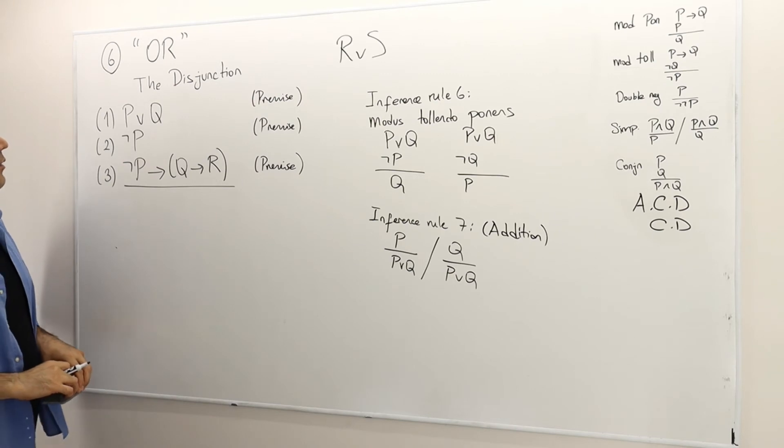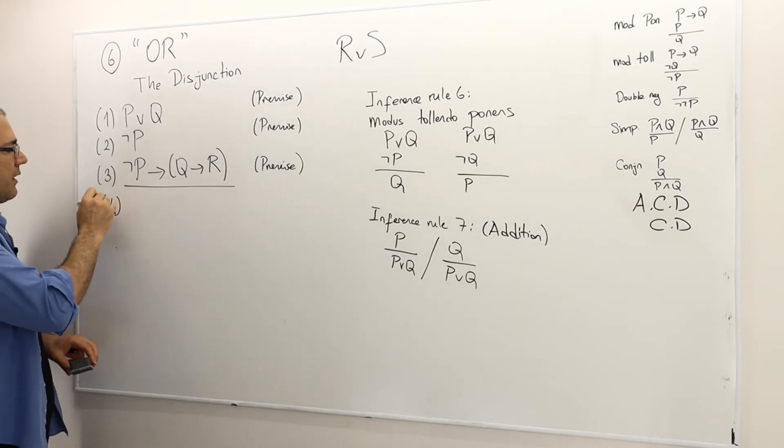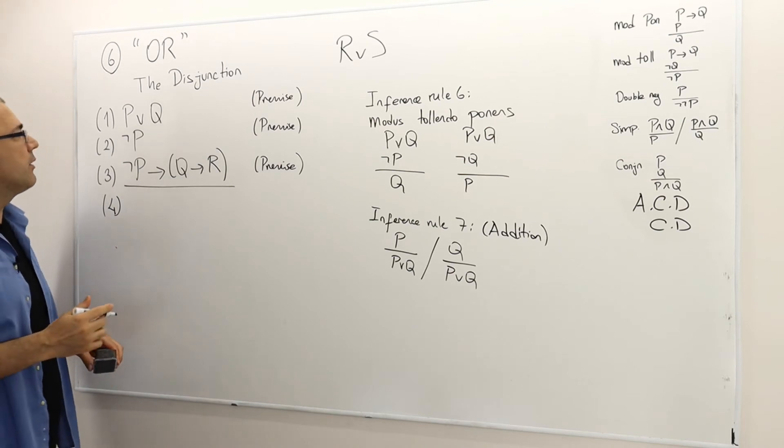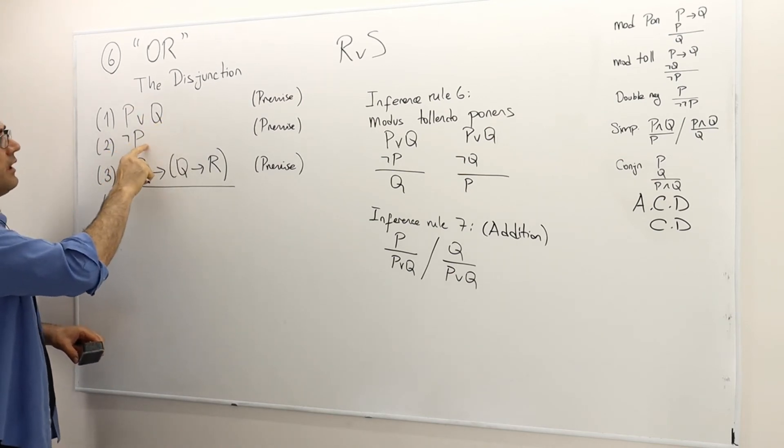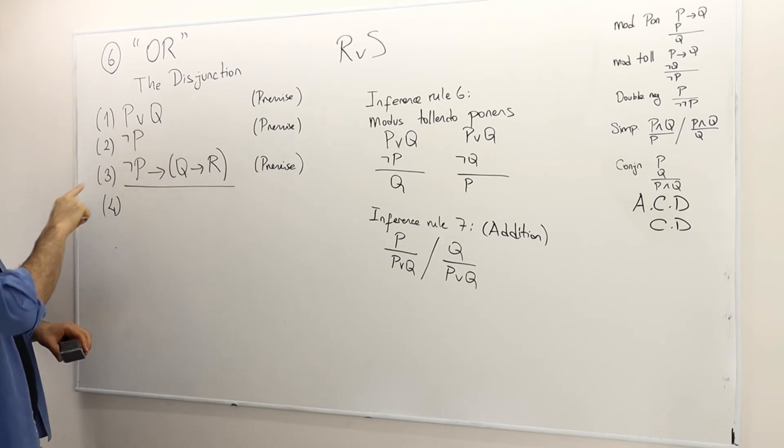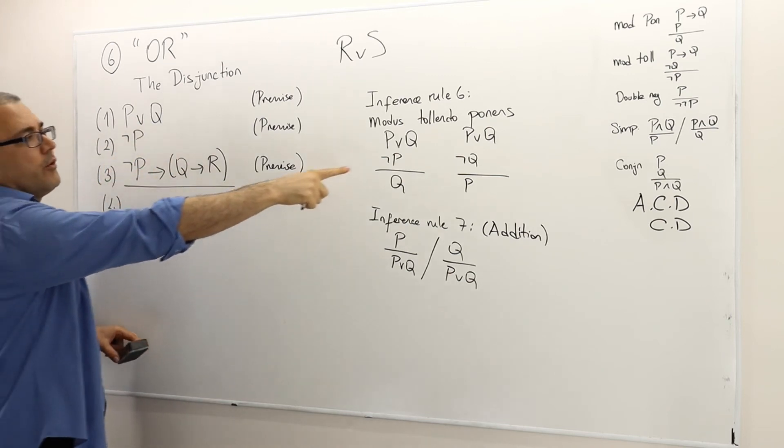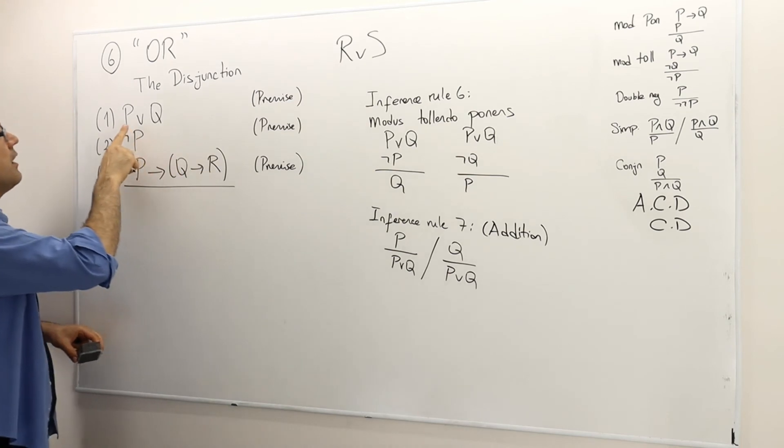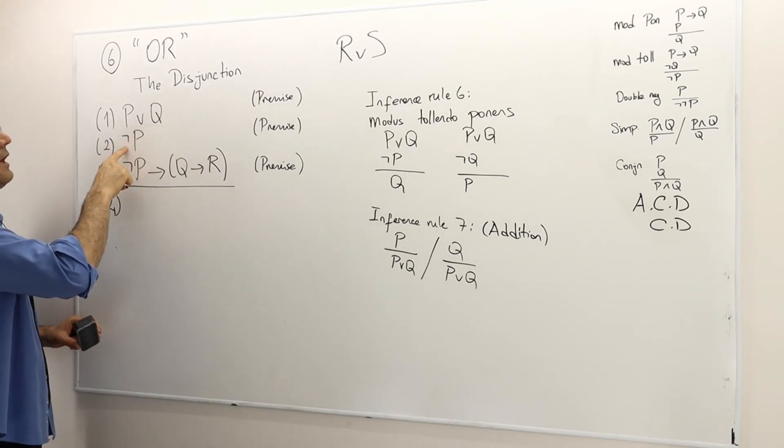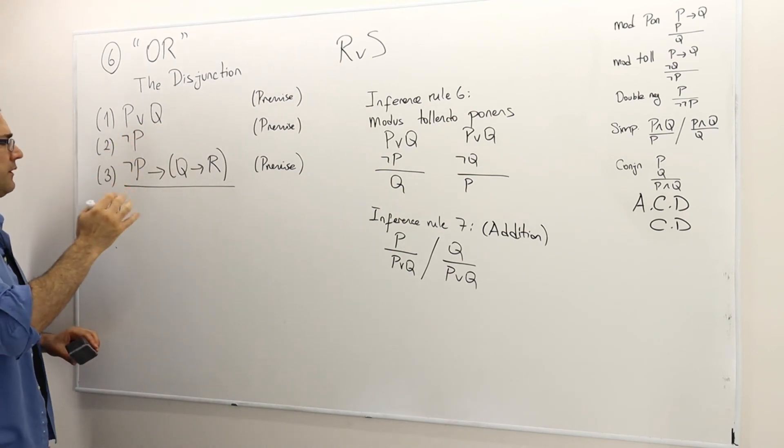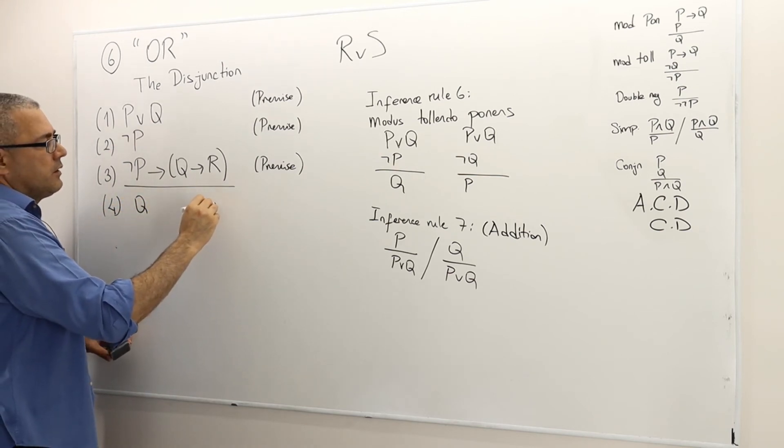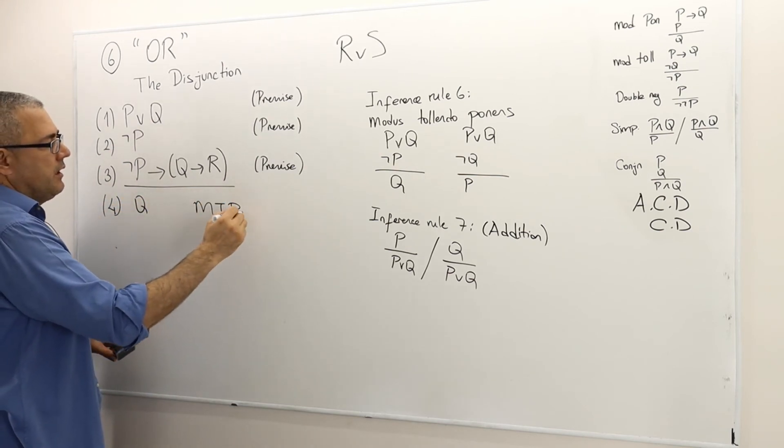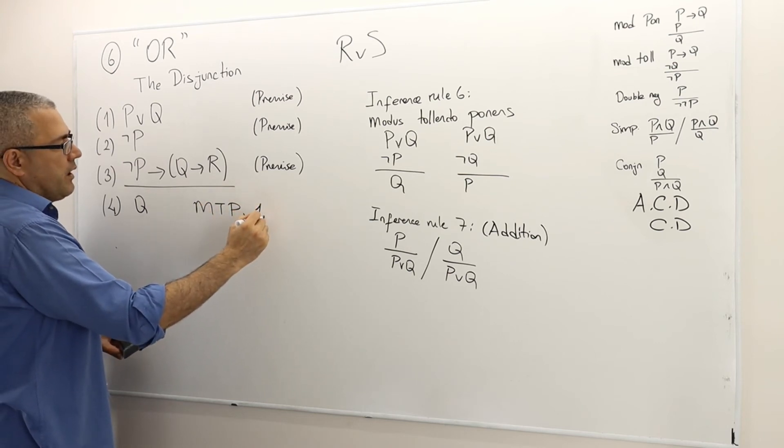So what do I have? First of all, I'm using direct proof by the way. I can use the first and the second statements, and this is basically modus tollendo ponens, right? P or Q is true, not P is true, therefore Q must be true. So this is modus tollendo ponens of the arguments one and two.